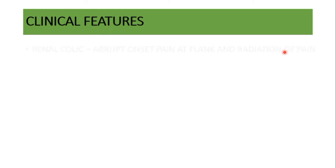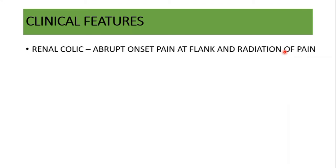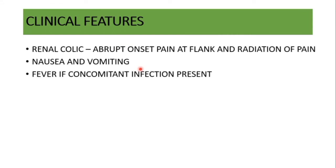For clinical features, the patient usually presents with renal colic. These patients are mostly asymptomatic, but when symptoms develop they are stormy — abrupt onset of sharp, severe pain in the flanks that can radiate anywhere depending on the location of the stone. The patient can also have nausea, vomiting, and if there is UTI or infection, fever. Patients are most often prone to hematuria — blood in the urine.